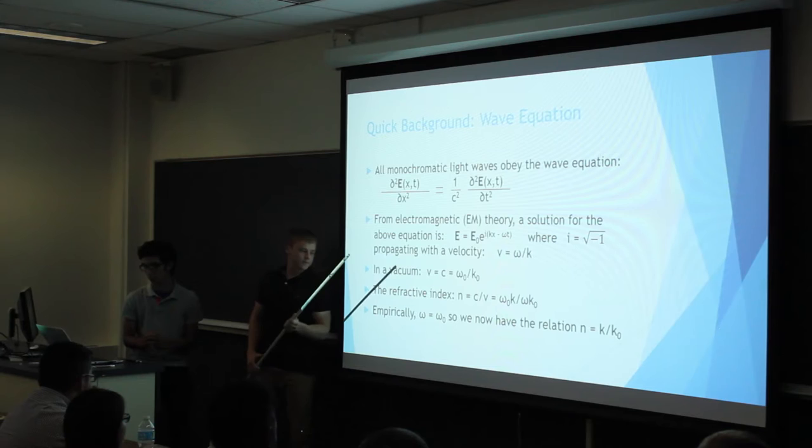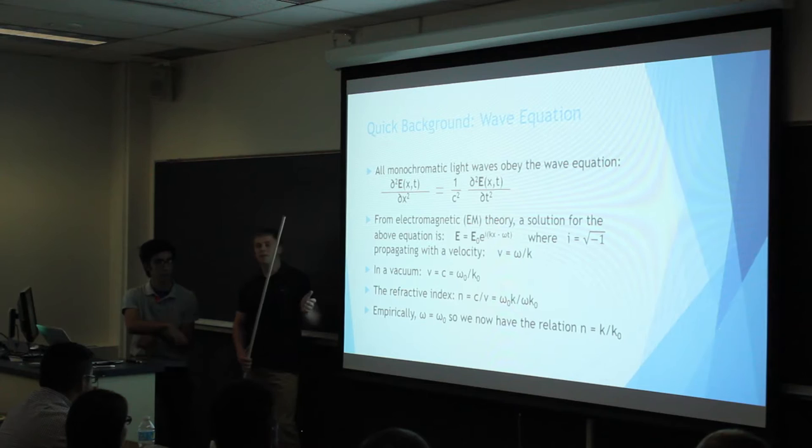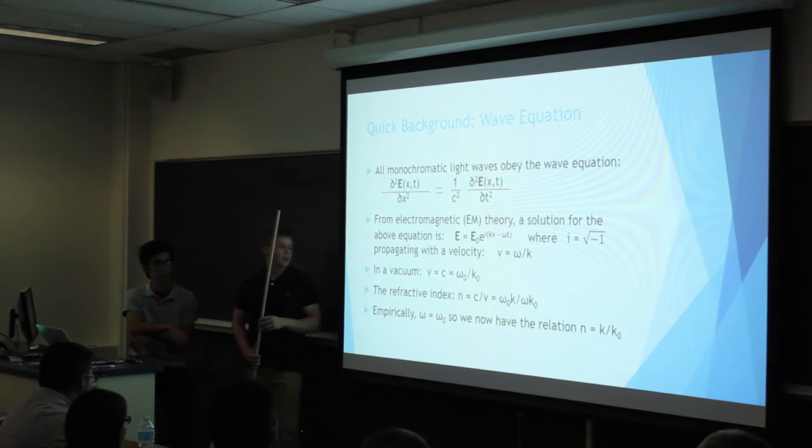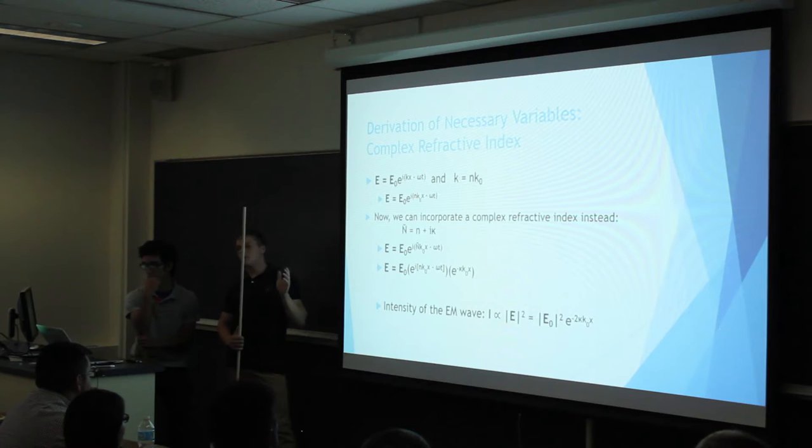In the vacuum, we know the velocity of this wave is equal to the speed of light, omega naught over k naught. Going to the refractive index, which is equal to c over v, we can substitute in these variables to get this relationship. And since we know experimentally that the frequency of the wave is independent of the material it's traveling through, omega equals omega naught, so we end up with n equals k over k naught.